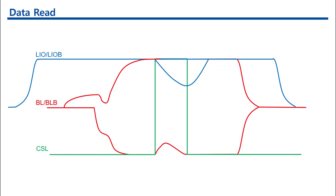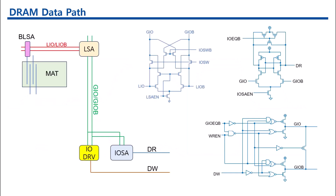During a read operation, the bit line sense amplifier is relatively weak compared to the strong IO driver. It has to drive the LIO and LIOB lines to a sense amplifier, IOSA. This component is essential because the BLSA cannot fully drive the IO lines due to their heavy loading. Instead, the IOSA amplifies the small voltage changes on the bit lines to accurately determine the stored data.